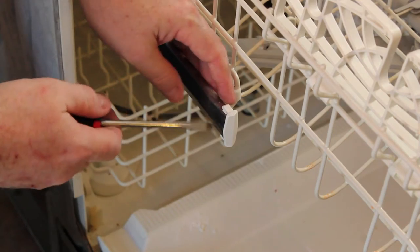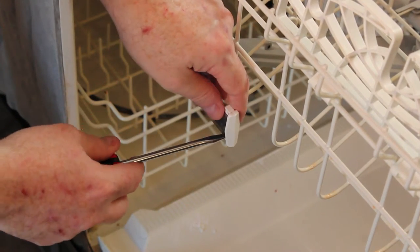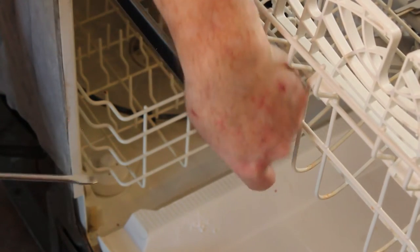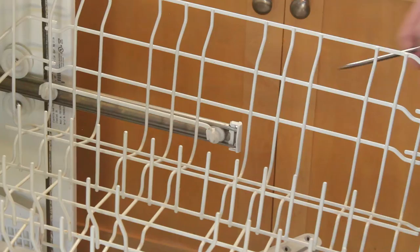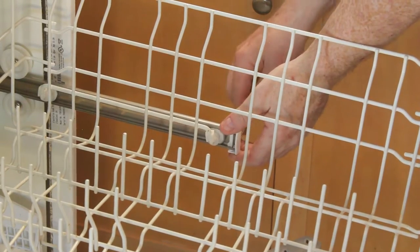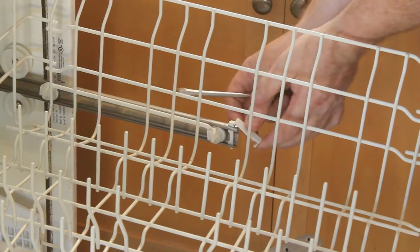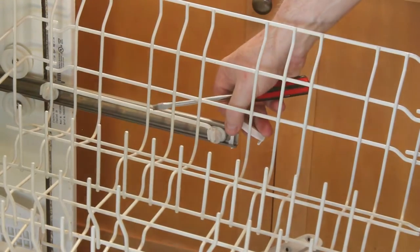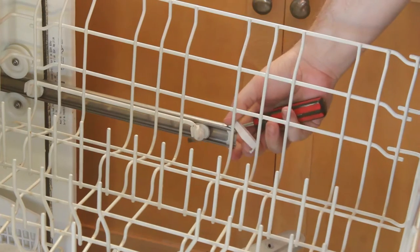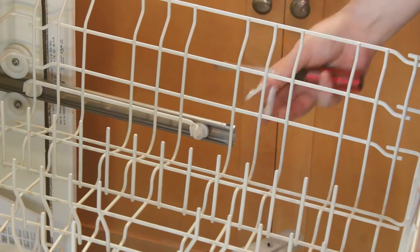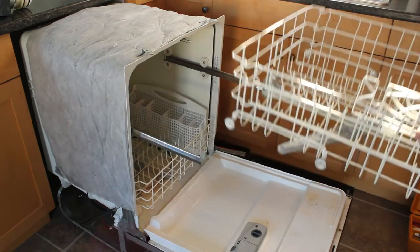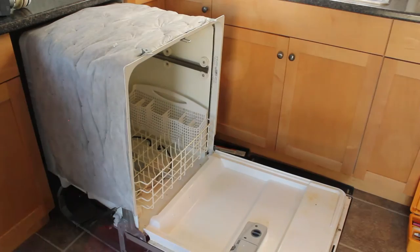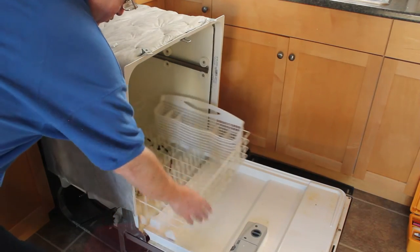To remove the upper basket, simply pop out the retaining clips at the ends of the railings. The lower basket, you can just lift it right out.